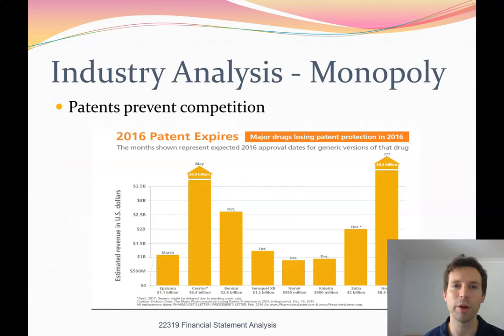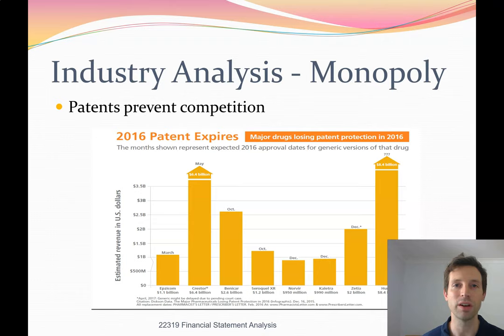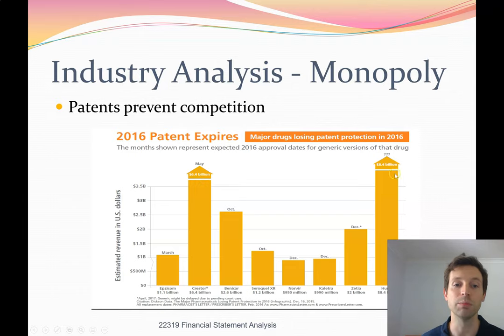Patents, copyrights, and other restrictions can also create a monopoly. For example, this graph shows different drugs that have had patents which expired. For a certain period of time, a pharmaceutical company holds a patent over a product and no one else can create or sell that same product — there's no ability for multiple suppliers. One company produces that individual product and generates substantial revenue. Some drugs approaching patent expiry in 2016 were earning billions and billions of dollars each year.